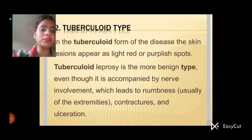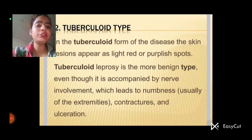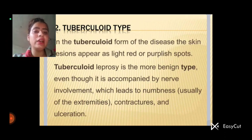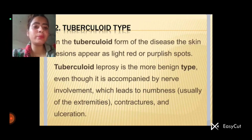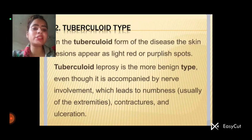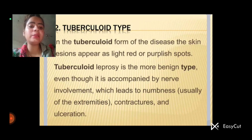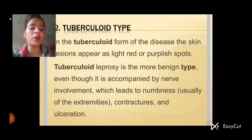Then, tuberculoid type. In the tuberculoid form of the disease, the skin lesions appear as light red or purple spots. The tuberculoid type is a more benign type, even though it is accompanied by nerve involvement, which leads to numbness, usually of the extremities, contractures, and ulcerations.